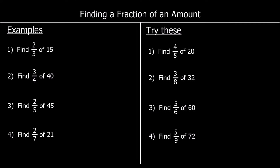Here we have another set of questions. The first one says find two thirds of 15. So we're splitting 15 into thirds — three different parts. 15 divided by three is five. So each part is going to be worth five. And we want two thirds, so we want two of the parts. Two fives are 10.